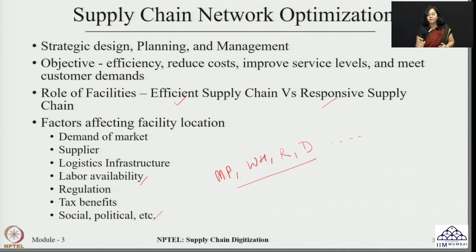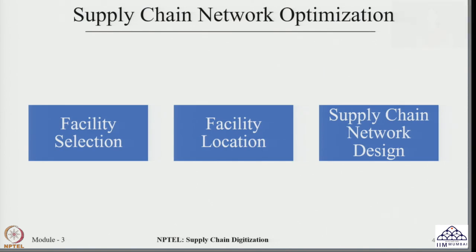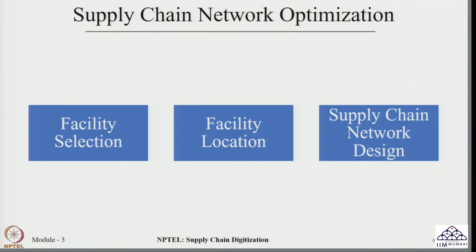If we understand the location of the facilities, we can see how these facilities are connected and how products will move from them to fulfill customer demand. This is a very critical, long-term strategic problem that requires a lot of planning. The next question is: what are the major types of decisions that can be taken in supply chain network optimization?